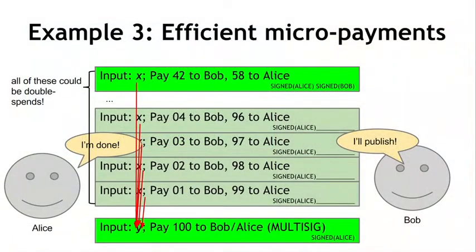Technically, all of these transactions are double spends. Unlike the case with green addresses where we were specifically trying to avoid double spends with a strong guarantee, with this micropayment protocol we're actually generating a huge amount of potential double spends. Although in practice, if both parties are operating normally, Bob will never sign any transaction but the last one, so the blockchain won't actually see any attempt at a double spend.